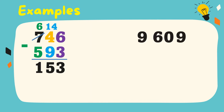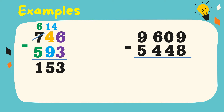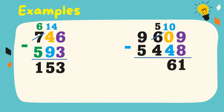Another example: 9,609 minus 5,448. Let's subtract from right to left. 9 minus 8 is equal to 1. 0 minus 4 cannot be. We borrow 1 from 6. 6 becomes 5 and 0 becomes 10. 10 minus 4 is equal to 6.